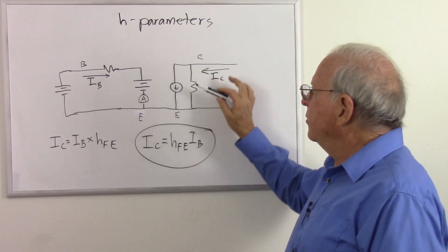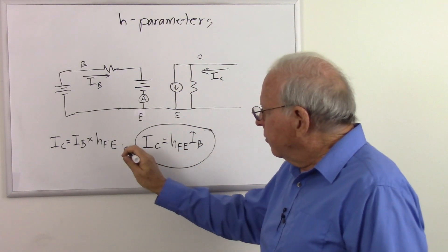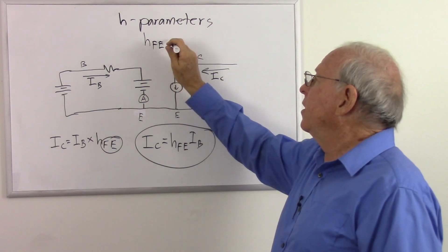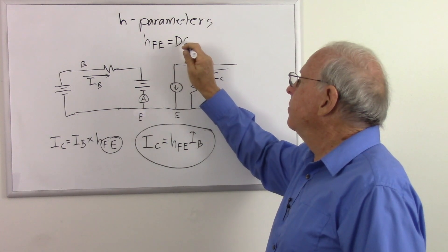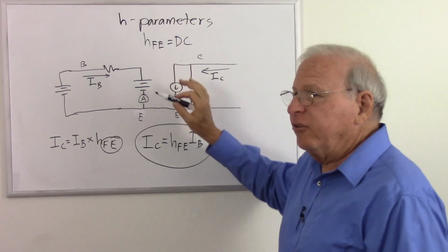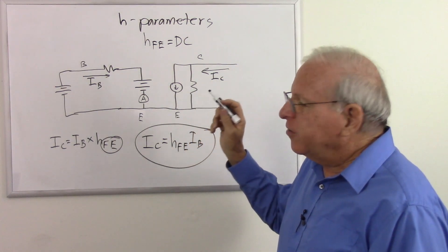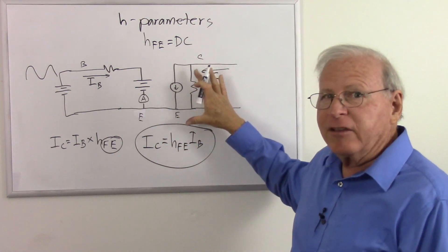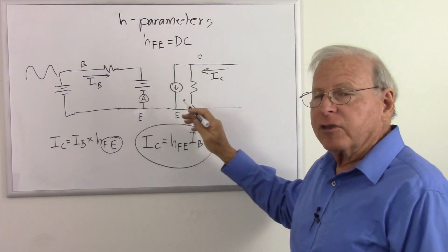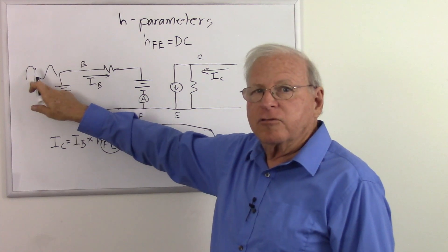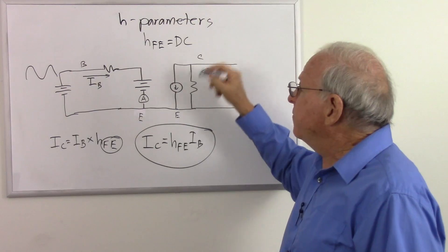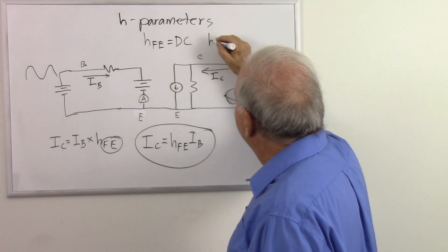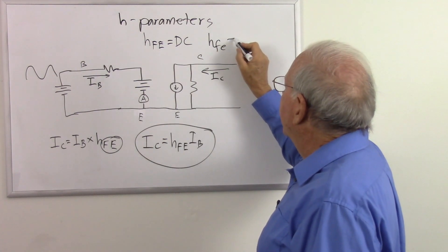Notice that these are capital letters. HFE with uppercase letters is our DC specification. However, remember that this changes with our collector current. So if this is an alternating current going in — current going up and down — our HFE is changing slightly as collector current goes up and down. So there's a slight difference between our DC parameters and our AC parameters. If we have lowercase hfe, that's going to be our AC parameters.